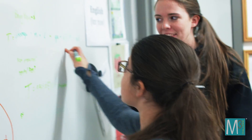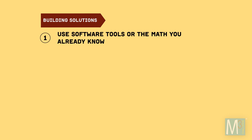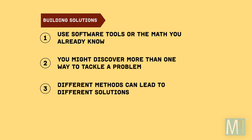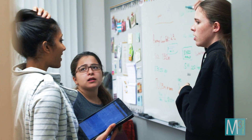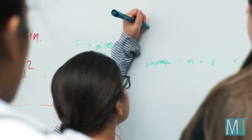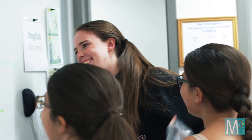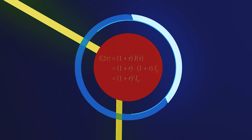Here's how to make sure you're on the right track. Build your solution using software tools or the mathematics you already know. You might discover more than one way to tackle a problem — be open. Different methods can lead to solutions of a different nature. Experiment to see what solution most directly addresses your question. Finding a solution is where you'll first discover if you've really addressed your problem statement. If you haven't, don't let it rain on your parade — simply go back to your math toolkit, ask yourself some questions, and reassess in order to get closer to a solution that works.